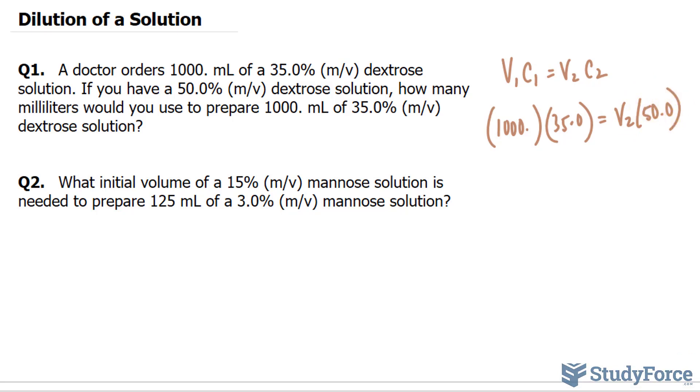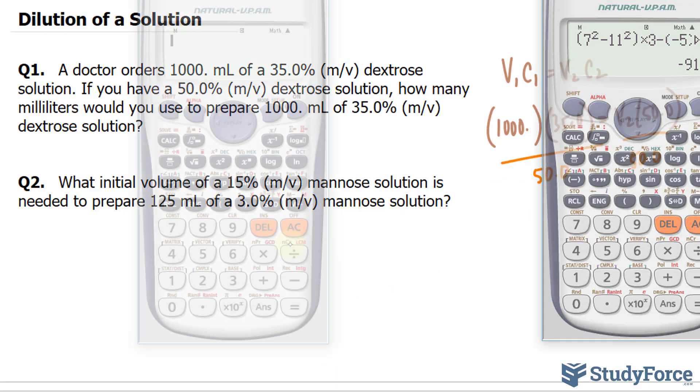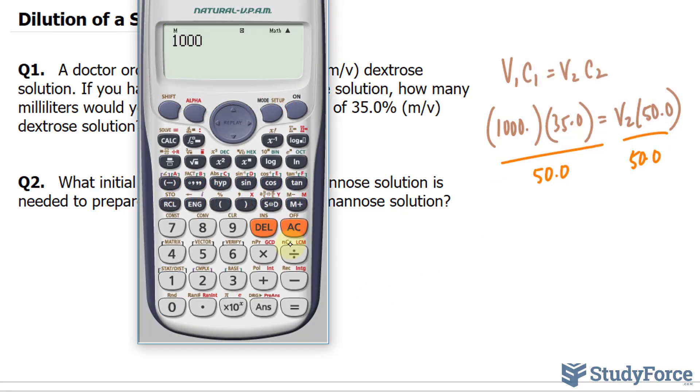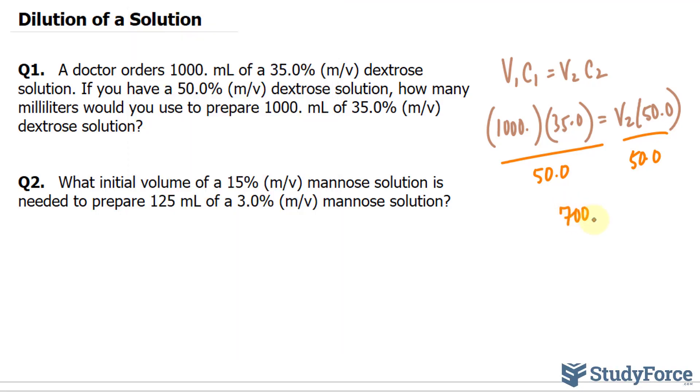All we have to do is solve for V2, and we can do that by dividing both sides by 50. Using our calculator, we have 1,000 times 35 divided by 50, and that gives us 700.